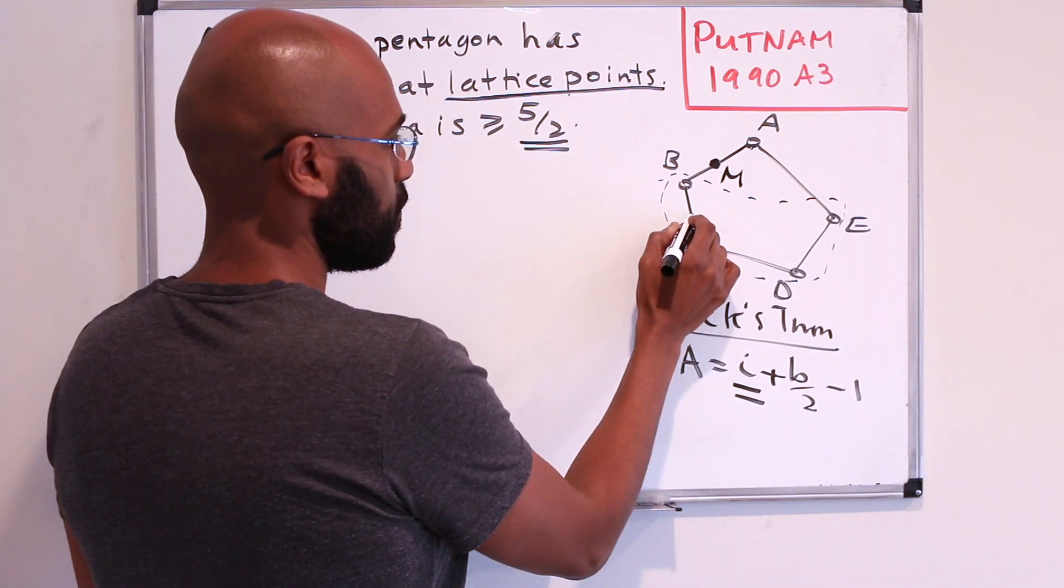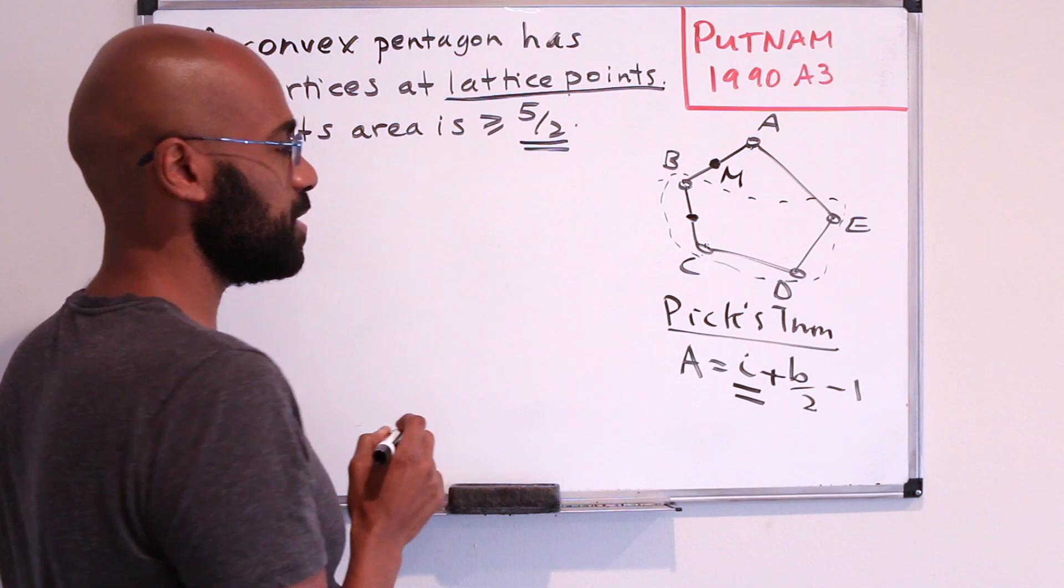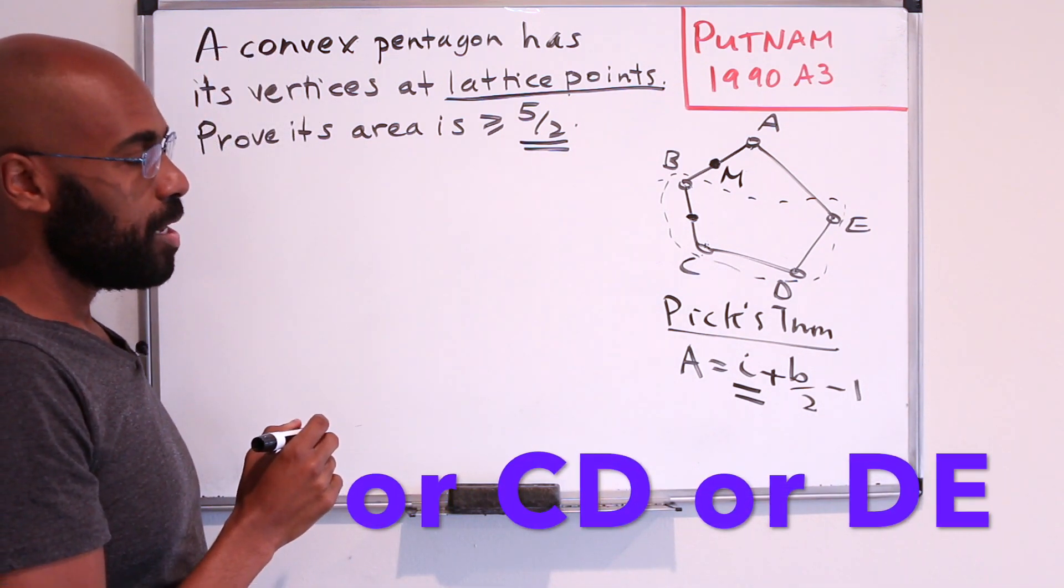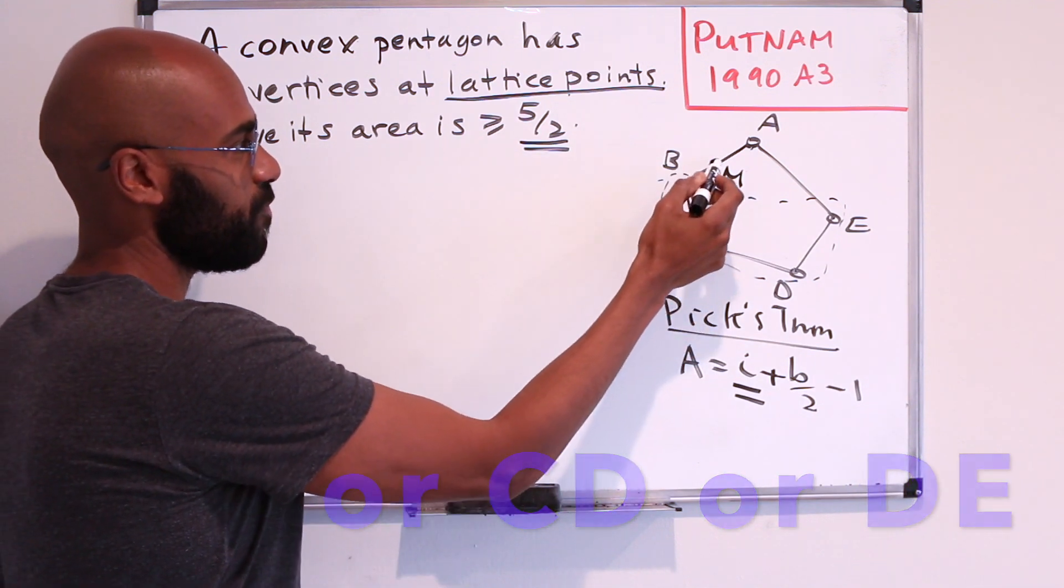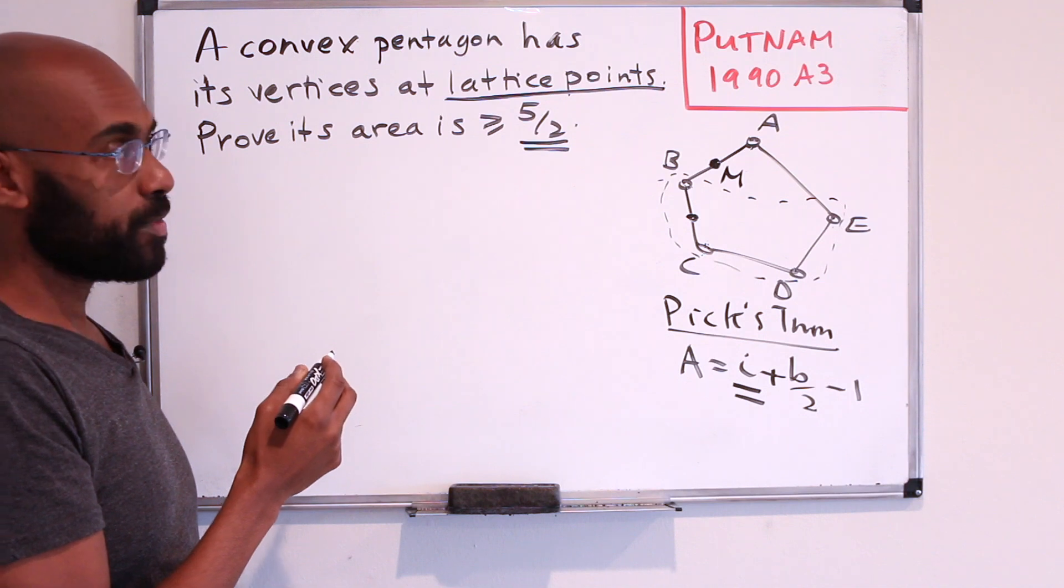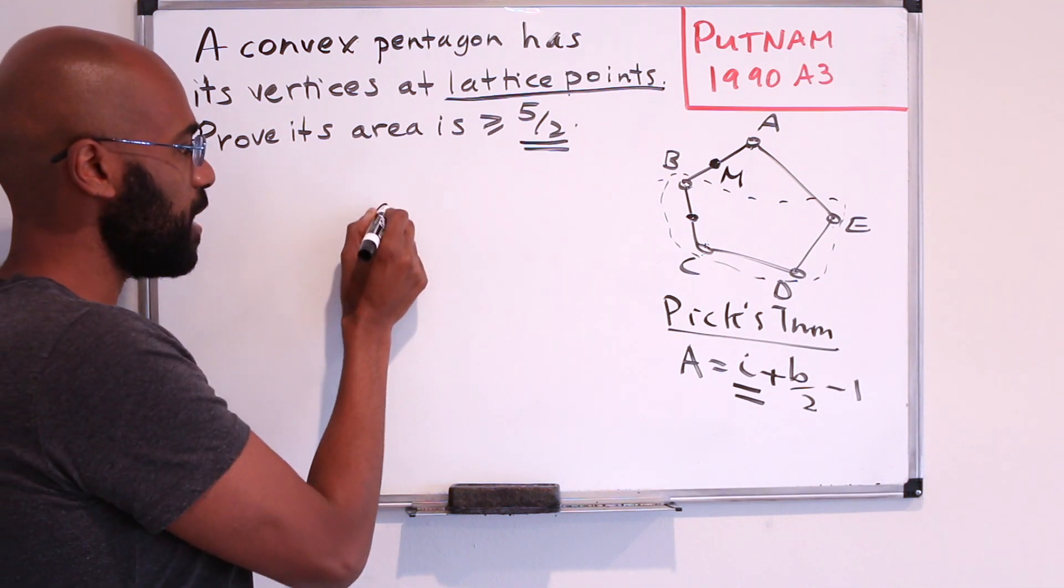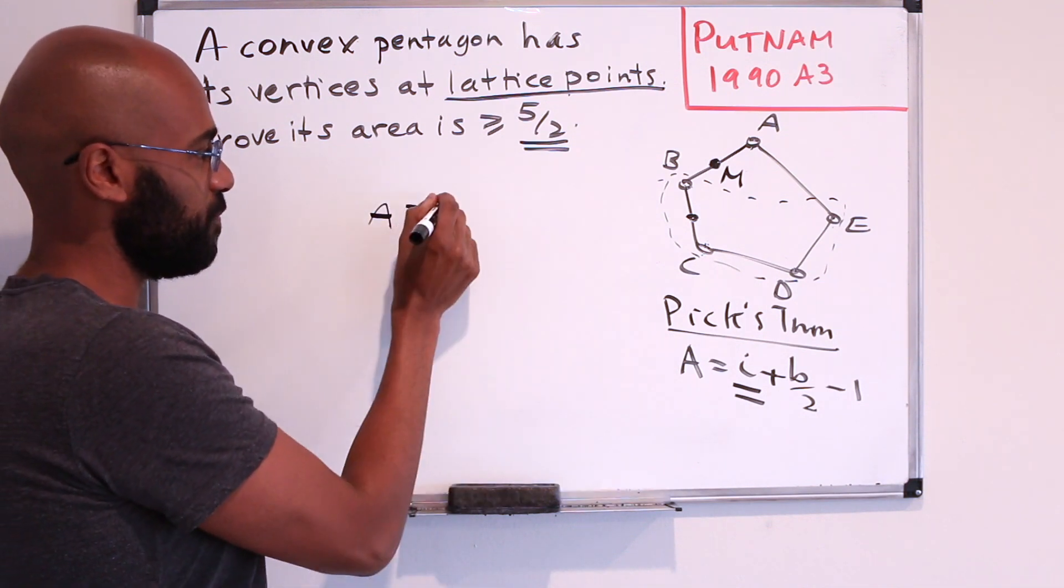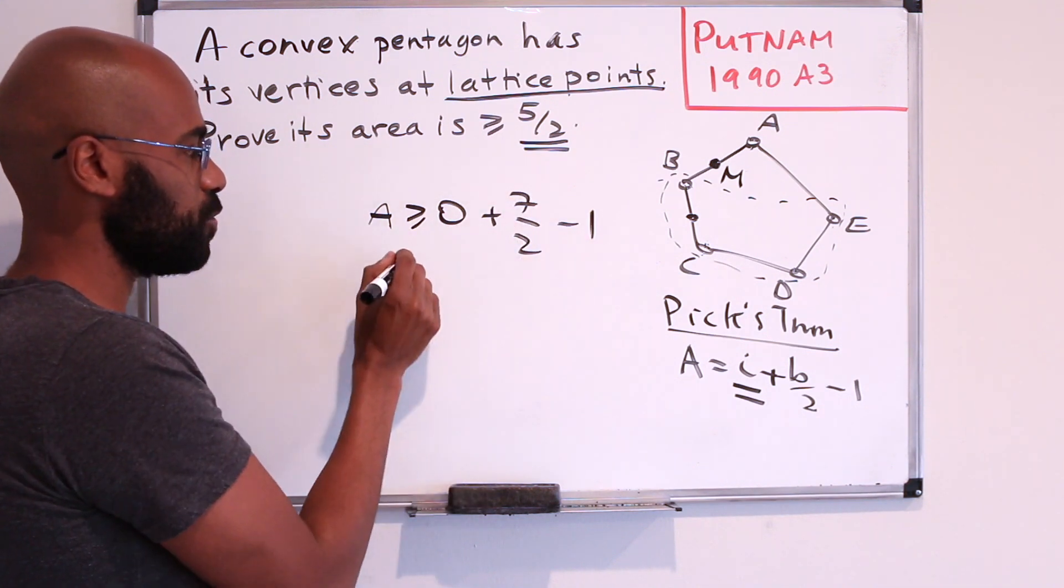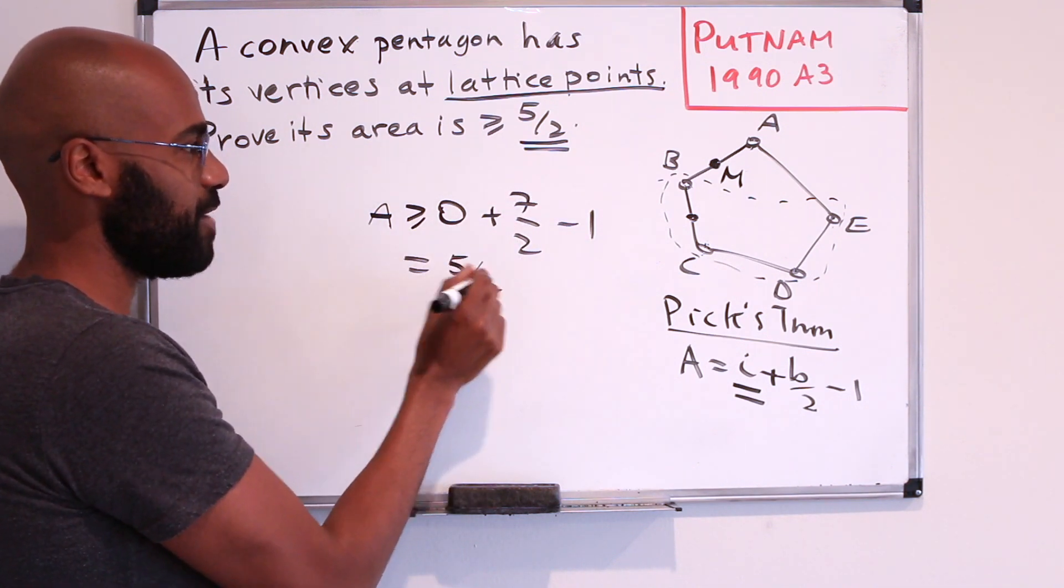It could be the case though that b and c are the ones that have a midpoint with integer coordinates, but in that case we would have one, two, three, four, five, six, seven boundary points with integer coordinates. So the area then would be at least, you don't even have to think about the interior points, we get seven halves already here, minus this one, which gives us a lower bound of five halves as well.